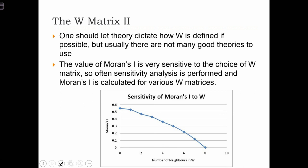How do we choose the appropriate definition for W to use? If there is some sort of theory about the spatial process we are studying, then maybe we can let that theory dictate how W should be defined. In most cases in spatial analysis, there is no good theory that tells us how W should be defined, so we tend to pick things like rook or queen contiguity cases, or a case where we use a distance decay function.